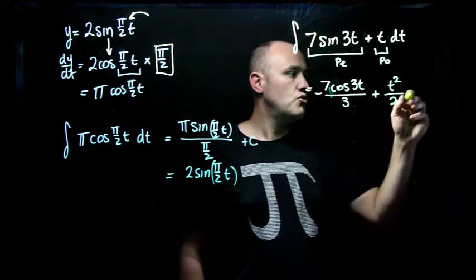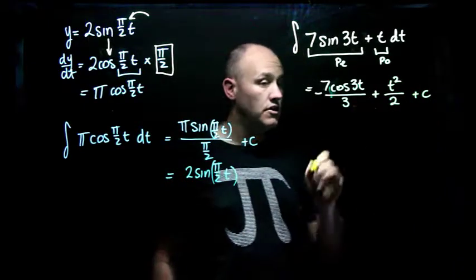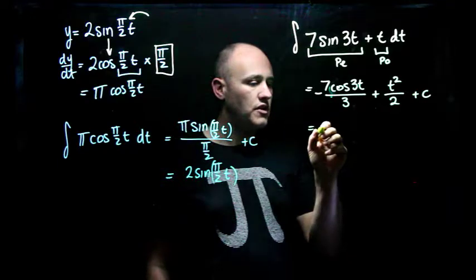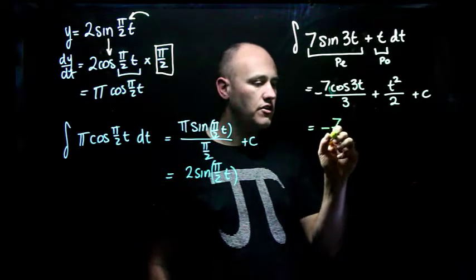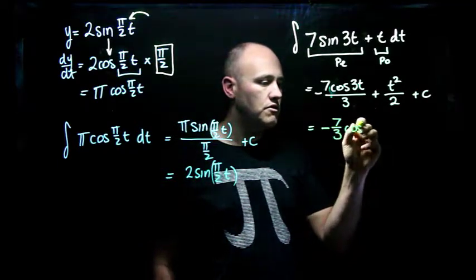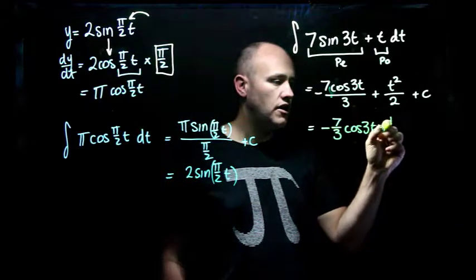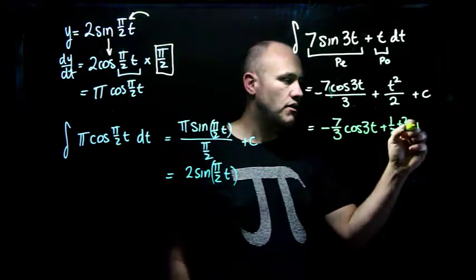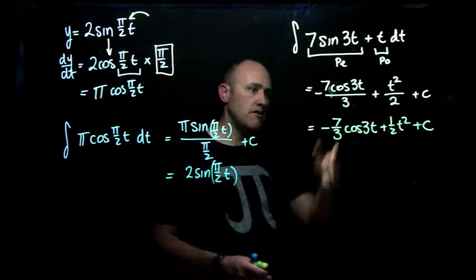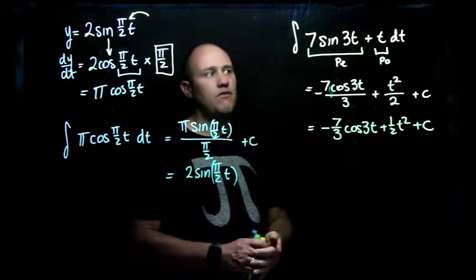And of course I get plus a constant c. And I can simplify that however I want. I'm going to write it down as -7/3 cos 3t plus 1/2 t squared plus c. But obviously the line before would be perfectly fine.